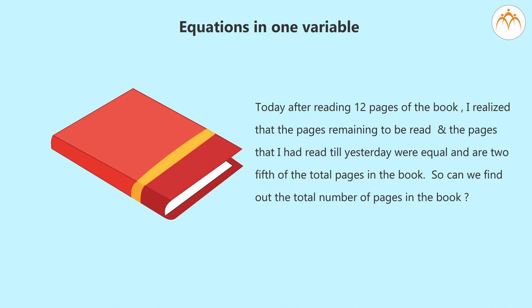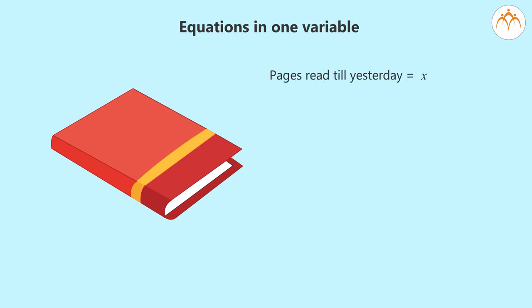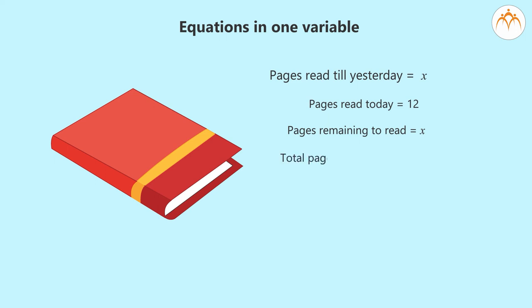We have to find the total number of pages in the book, but the information we have is about the pages remaining and the pages read till yesterday. If we show the pages read till yesterday by the variable X, then the pages read today is 12, and the pages remaining to be read also equals X. The total pages in the book will be the sum of all these: X plus 12 plus X, that is 2X plus 12.